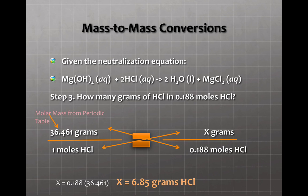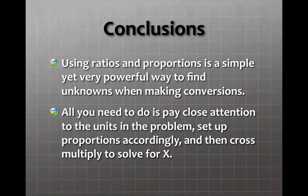So, in conclusion, I think using ratios and proportions is a simple but very powerful way to find unknowns when you're making these multiple conversions. All you need to do is pay close attention to the units in the problem. You set up your proportions accordingly. Make sure the top, what's on the top is on the top on both sides. What's on the bottom is on the bottom both sides. And then simply cross multiply to solve for your x.